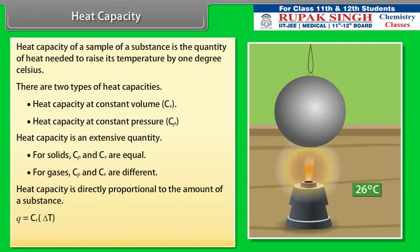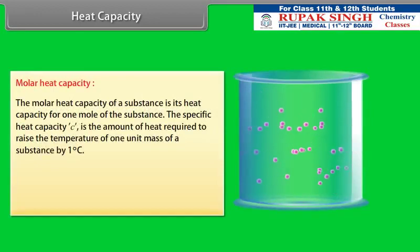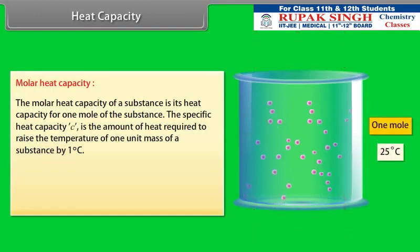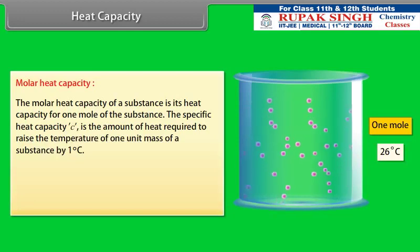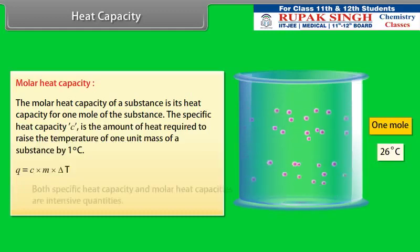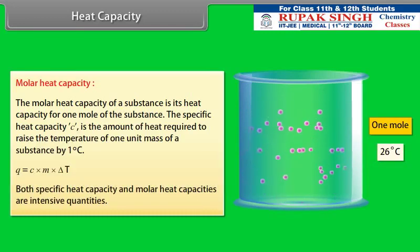Q equals Cv × ΔT, where ΔT equals Tf minus Ti. The molar heat capacity is the amount of heat required to raise the temperature of 1 unit mass of a substance by 1 degree Celsius. Q equals C × m × ΔT. Both specific heat capacity and molar heat capacity are intensive quantities.